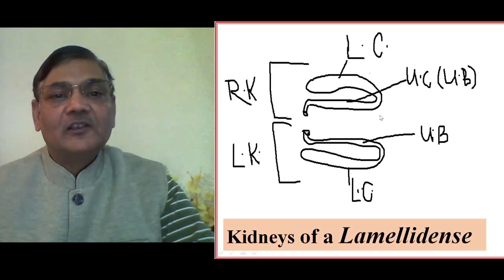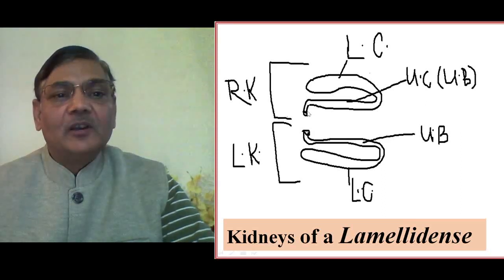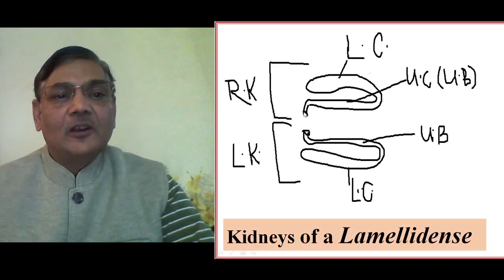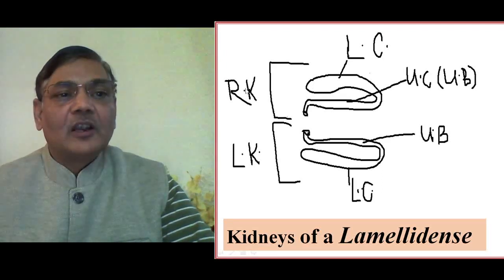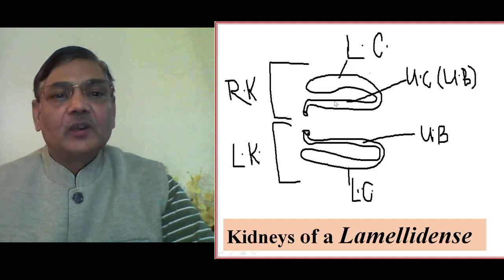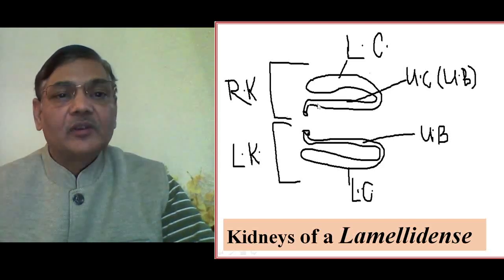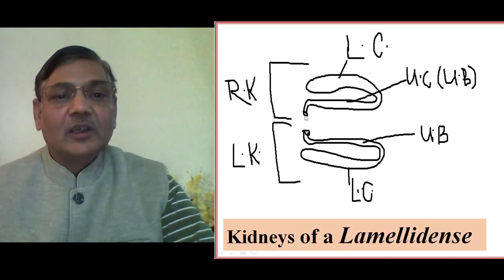There are four suprabranchial chambers situated just above each gill lamina. In Lamellidens, there are four gill laminae — two outer and two inner. The renal openings are present in the inner gill laminae. The right kidney similarly has its lower chamber and upper chamber, which acts as a urinary bladder, retaining excretory contents before releasing them into the suprabranchial chamber, particularly the inner section.